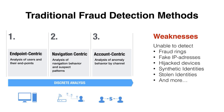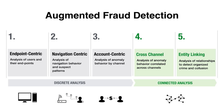Traditional fraud detection methods use discrete analysis, which can only relate two to three pieces of information at a time, by common IP addresses, common shipping addresses, or a common bank account. With the complex fraud schemes being employed today, some of the patterns go into multiple tens of attributes and require over tens of thousands of transactions to find the fraudulent pattern. This needs connected analysis, which is only possible with connected data in Neo4j graph database.